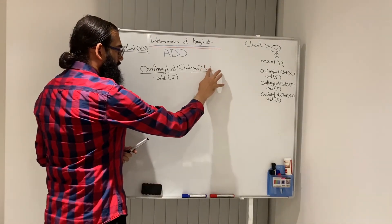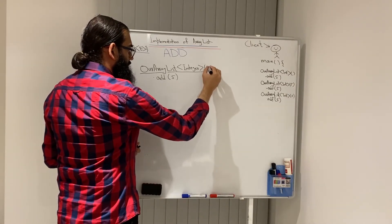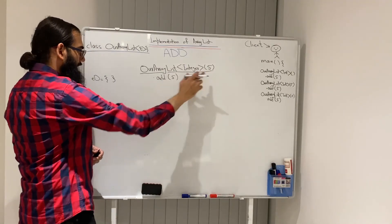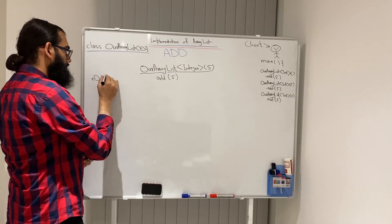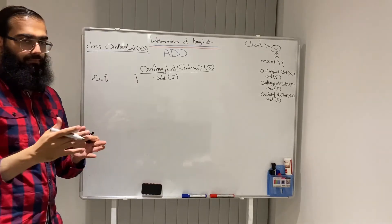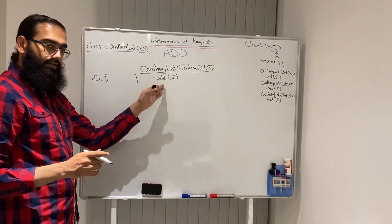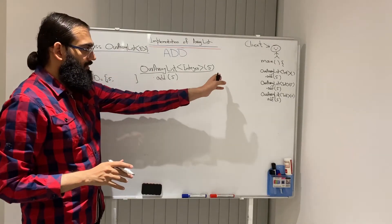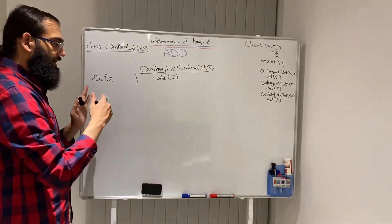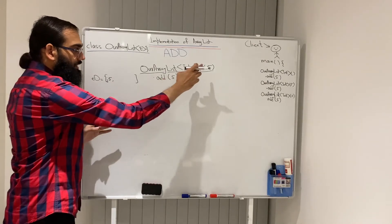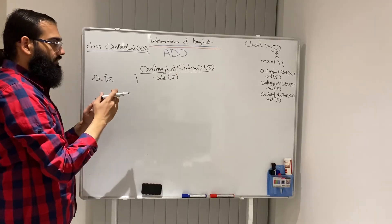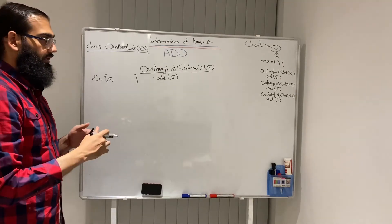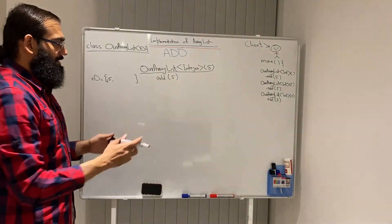Use case 2: the client gives an initial capacity of 5. As soon as this code executes — even before add is called — we already have an array with 5 empty spaces in memory. When the client calls add, we add the element right away. The key difference: with the default constructor there is no array in memory until add is called; with an explicit capacity, the memory is allocated immediately. You need to decide which constructor is right for your use case.